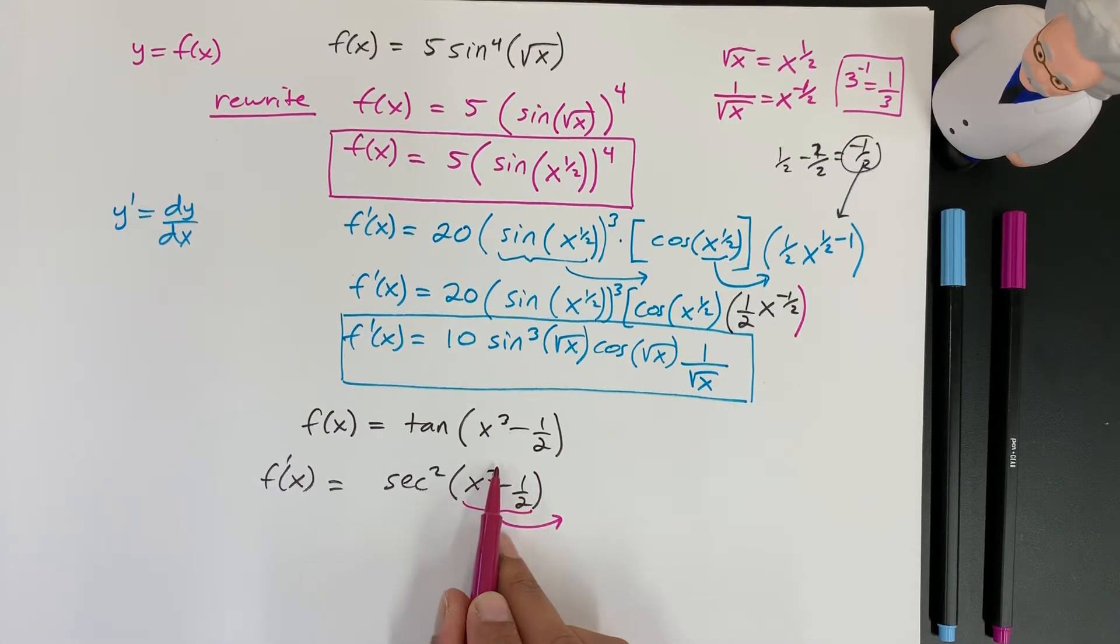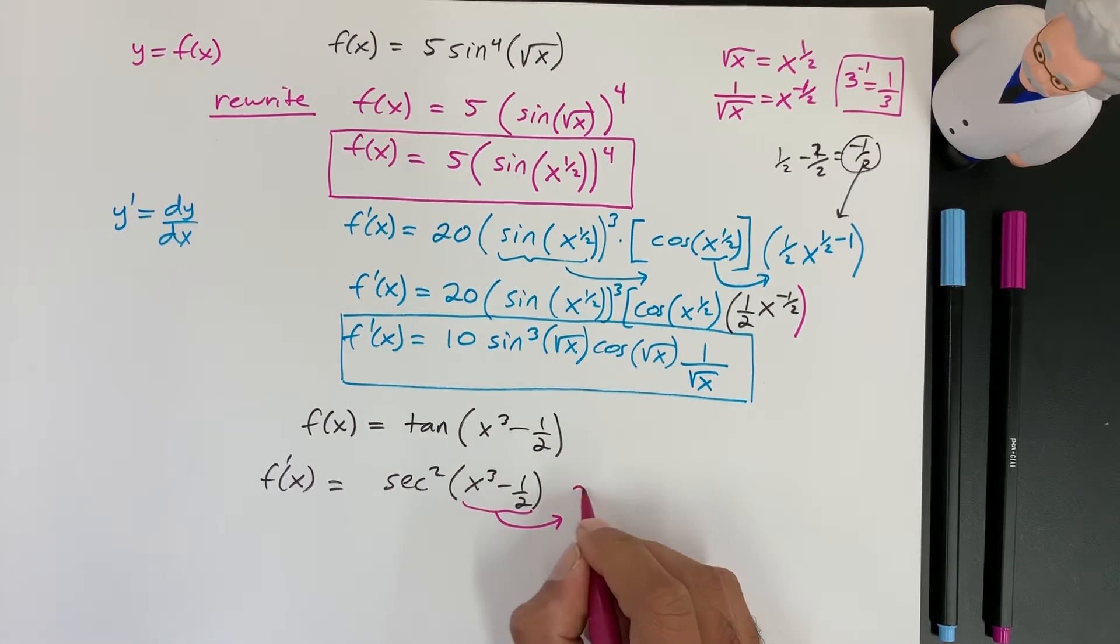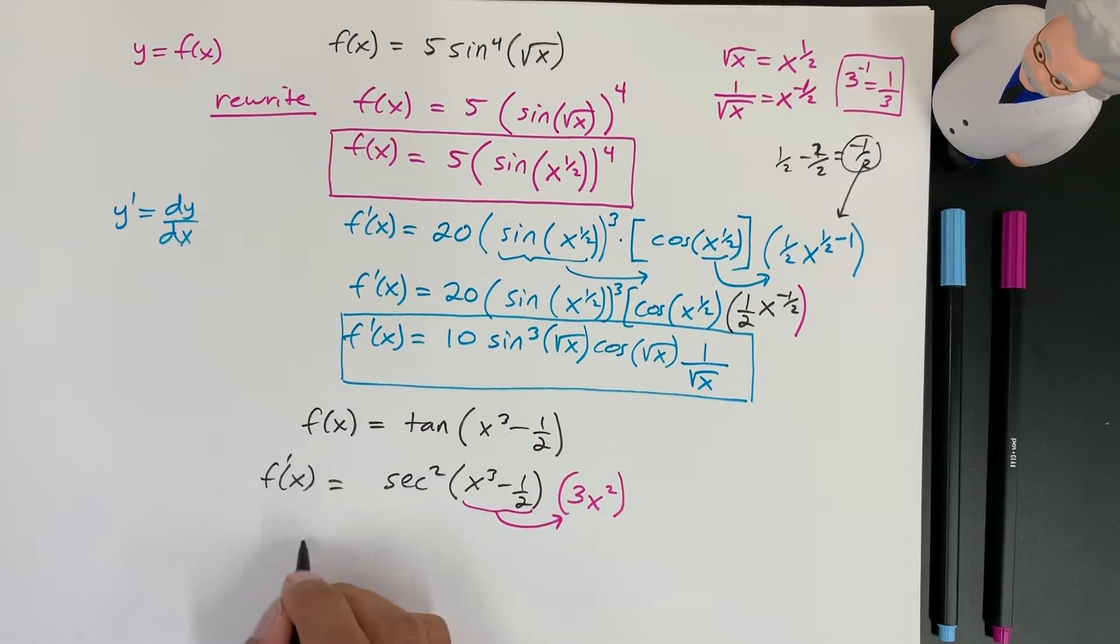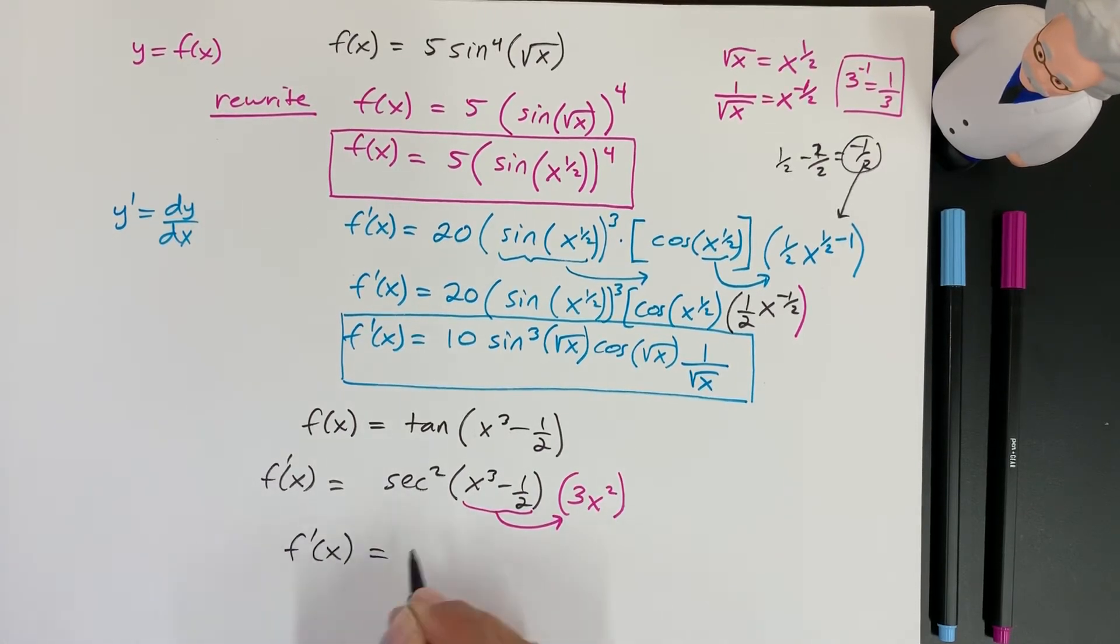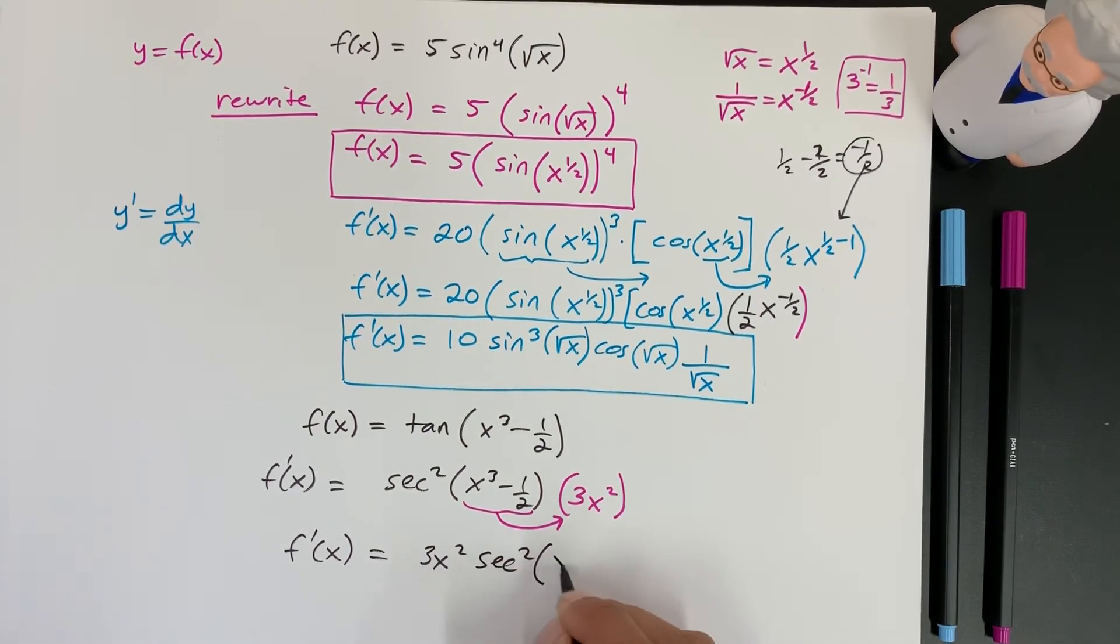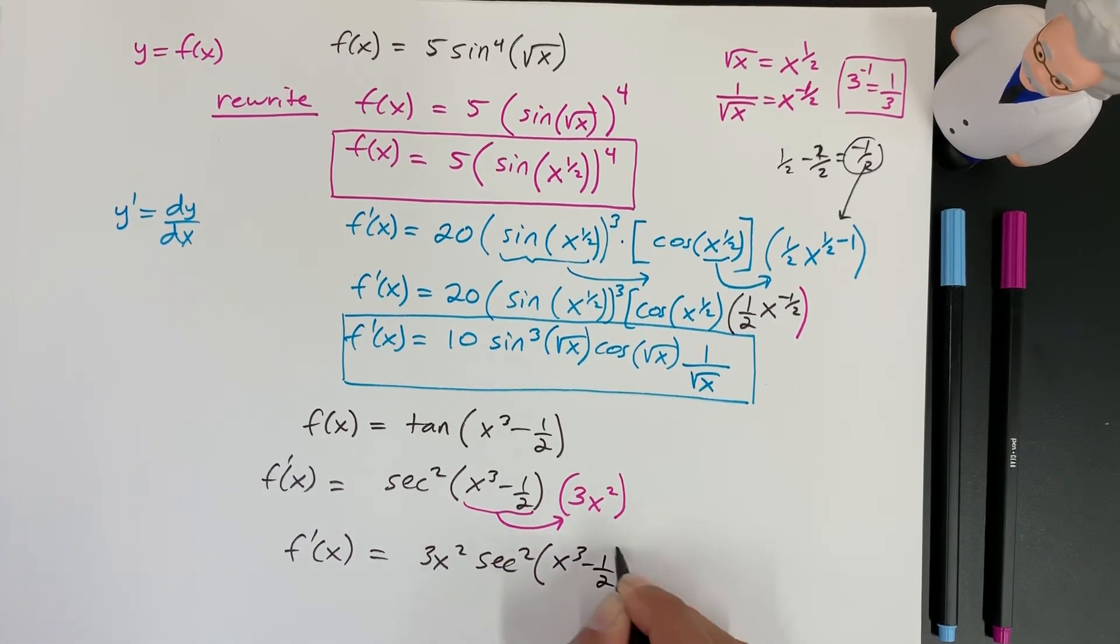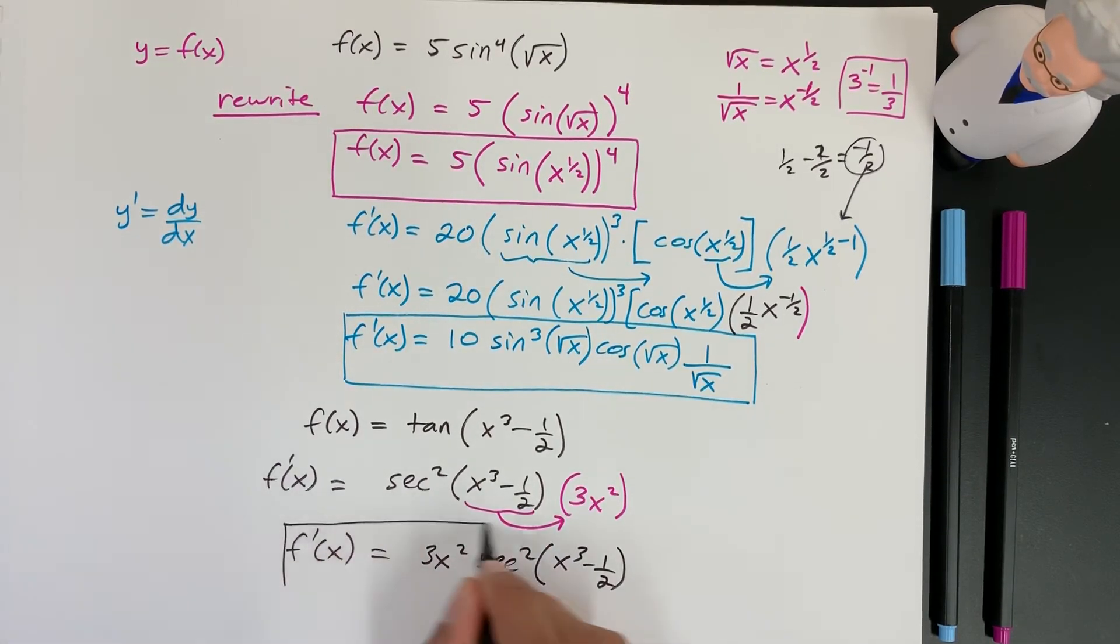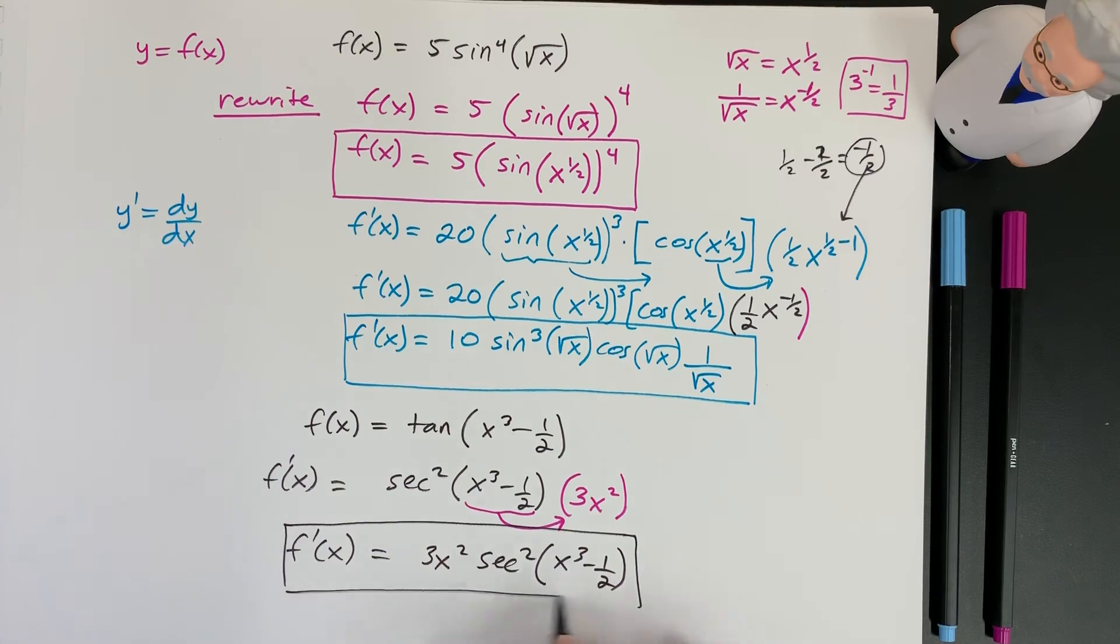And so the only thing that has a function of x is this term. This one goes to 0. So here we have 3x and 3 minus 1 is 2. So the derivative is we can bring this stuff to the front. We have 3x squared, secant squared, x to the third minus 1 half.